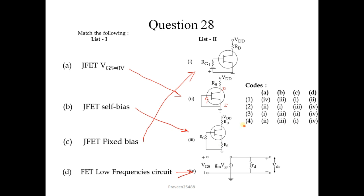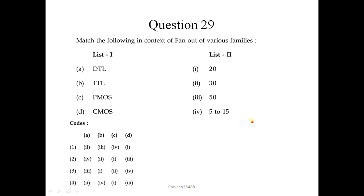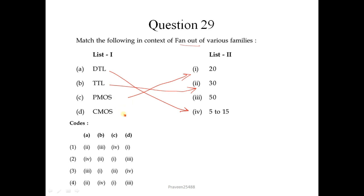Question number 29 - match the following in context of fan-out of various logic families. For DTL, the fan-out varies between 5 to 15. For DTL it is 30, and for CMOS it is 20. For CMOS it is the highest, that is 50. So the correct sequence is 4-1-5-... and the correct option is 2.